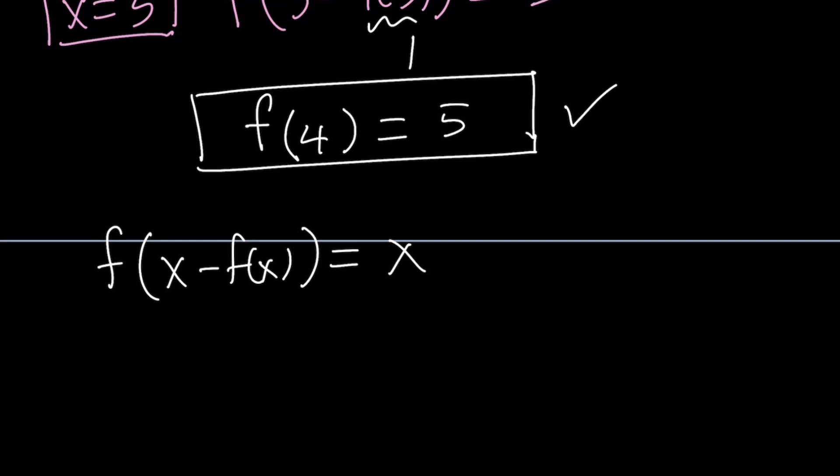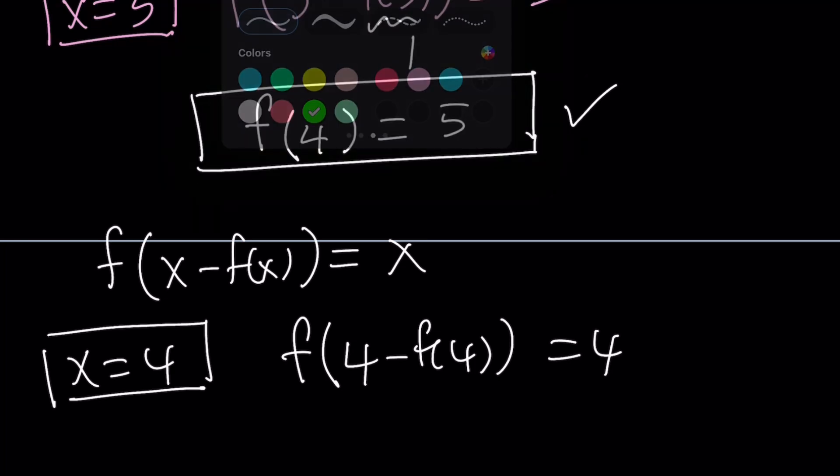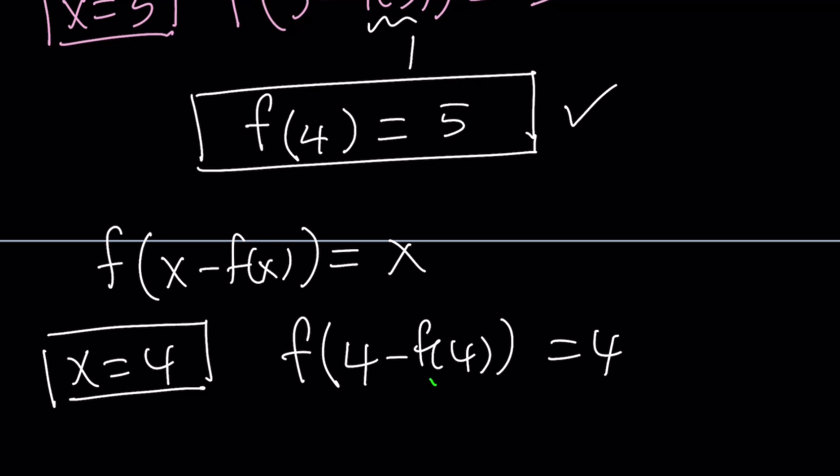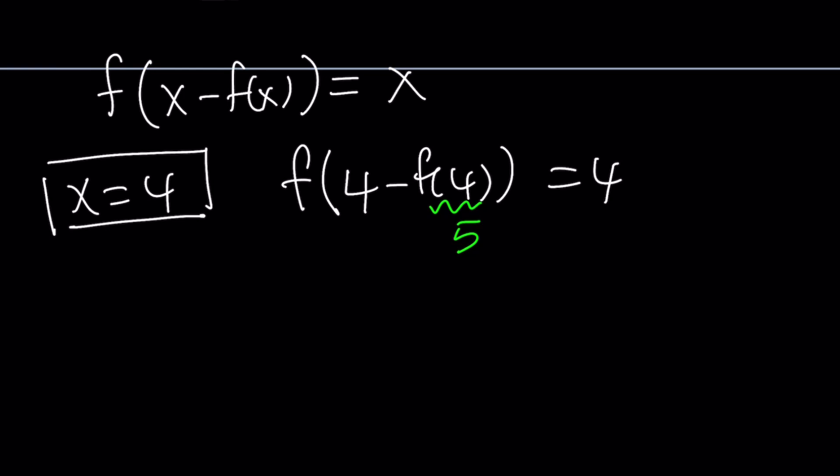So here it makes sense to replace x with 4. Let's go ahead and do that. And that gives us f of 4 minus f of 4 equals 4. Now we do know that f of 4 is equal to 5. So we can go ahead and replace f of 4 with 5. That gives us f of 4 minus 5 which is f of negative 1 equals 4.